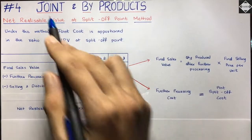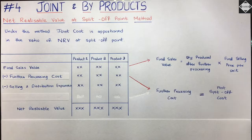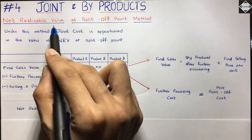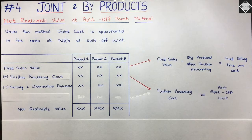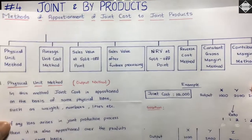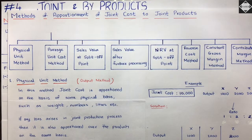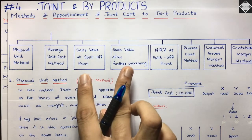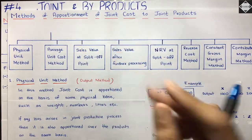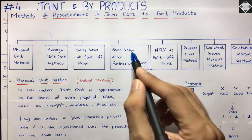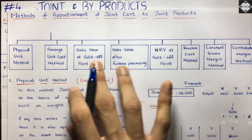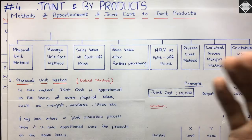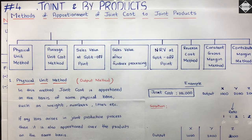Welcome back to the fourth video of the Joint Products and By-product chapter. Today we are going to understand yet another method of apportioning joint cost to joint products - the Net Realizable Value at Split-off Point method. So far we have covered four methods: the physical unit method, average unit cost method, and sales value method with two variants. If you haven't watched those videos, please go back and watch them first.